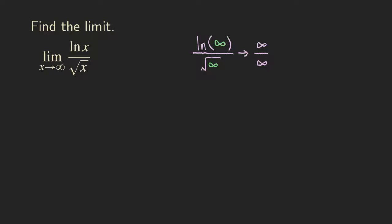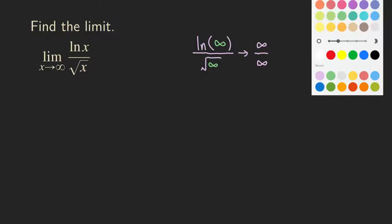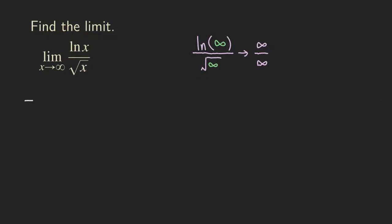Now that we have the indeterminate form, we can apply L'Hôpital's rule for this problem. What happens is that we apply L'Hôpital's rule the first time and differentiate the top and the bottom separately. When we differentiate ln(x), we get 1/x as the numerator.